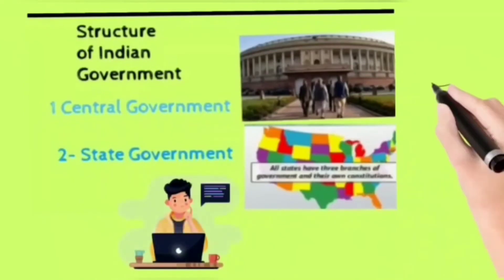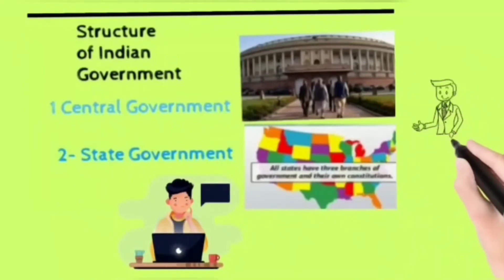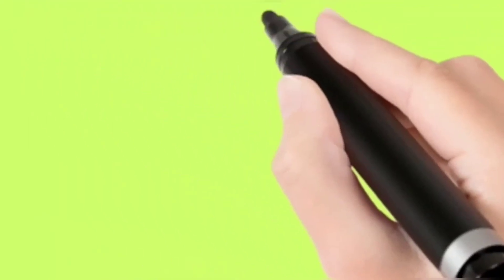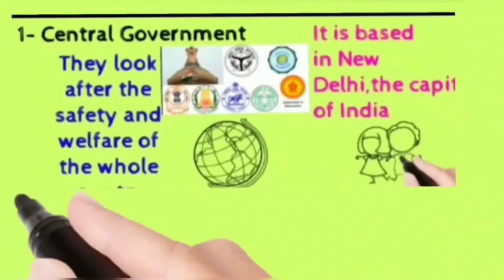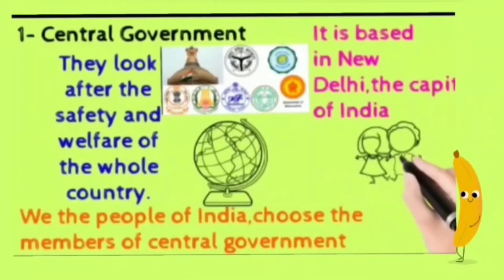The structure consists of, first, the central government, and second, the state government. The central government looks after the safety and welfare of the whole country.